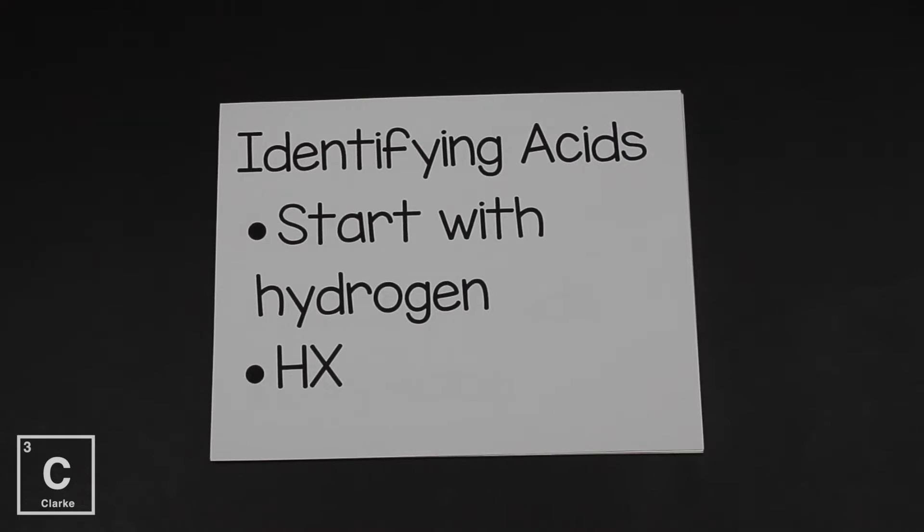So let's get started with naming. First we need to be able to identify an acid. For what we need to know right now for naming acids, let's say that all acids begin with hydrogen. So here's a generic formula for an acid. Starts with the hydrogen and then there's going to be either a non-metal or a polyatomic ion. Now really and truly, all acids do not have to begin with hydrogen. But the naming system we're about to learn is when acids begin with hydrogen.